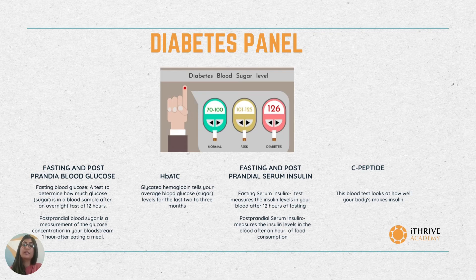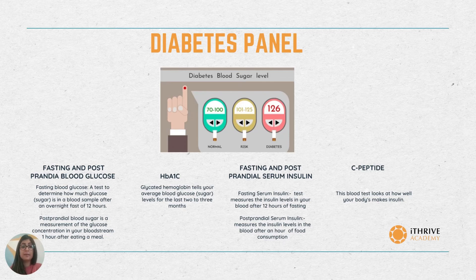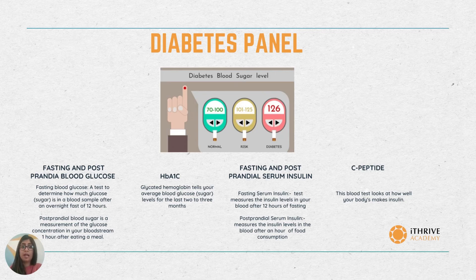HbA1c, also known as the hemoglobin A1c test or glycated hemoglobin, tells your average blood sugar levels for the last three months. When glucose binds in the blood, it binds with our hemoglobin in RBCs. This test measures how much glucose is bound to hemoglobin. As the RBC lifespan is 120 days, this test tells the average blood sugar level for the past three months.